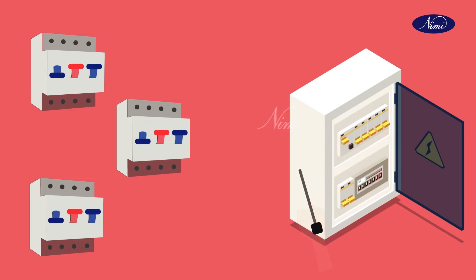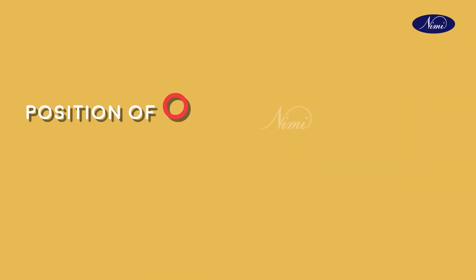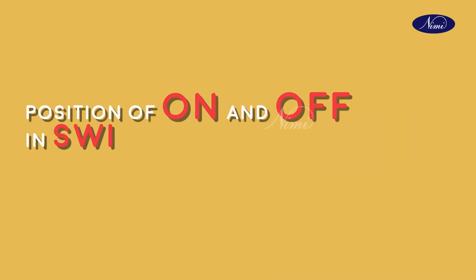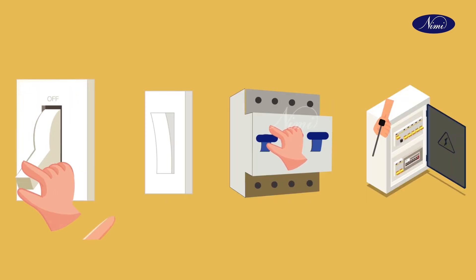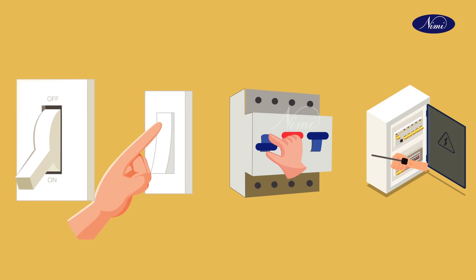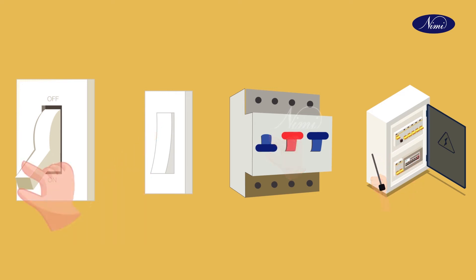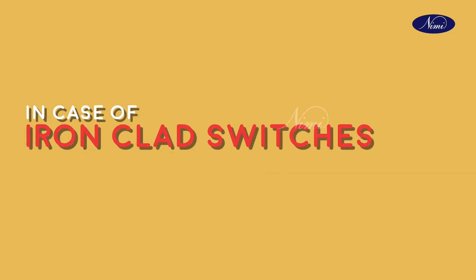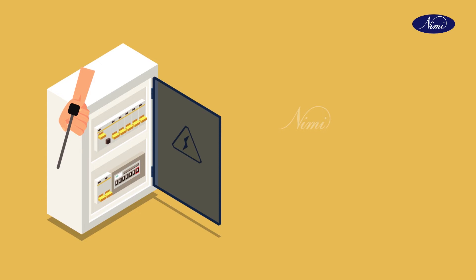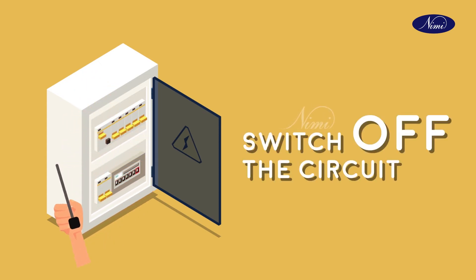Now, the positions of on and off in switches. It is important to know the correct position of on and off in any type of switches. In case of iron clad switches, the handle should be pushed down to switch off the circuit as shown here. If the handle is in the upper position, the switch is in on condition.